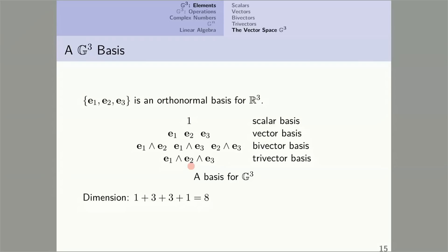What about the dimension of the vector space G3? Well, let's add them up. One for scalars, three for vectors, three for bivectors, and one for trivectors for a total of eight. The dimension of the vector space G3 is eight. And that's two cubed. The three here comes from the fact that we're working in 3D.